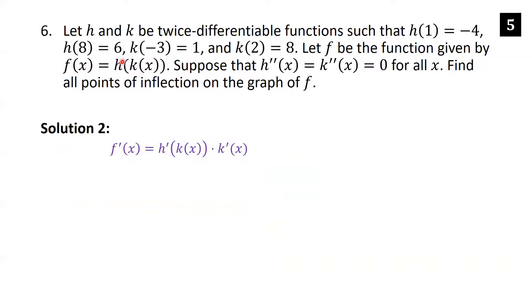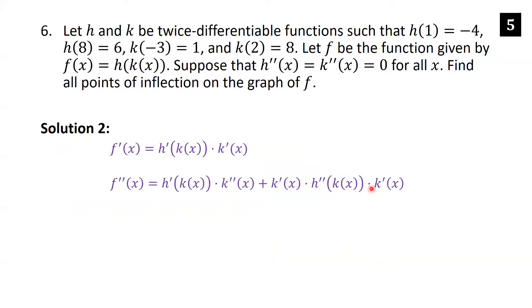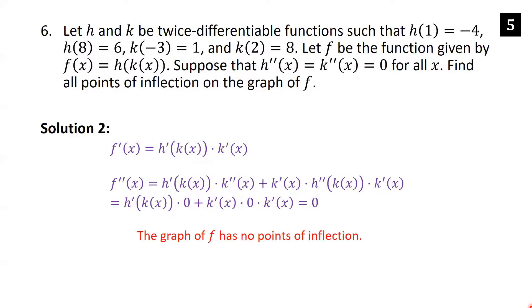Second solution: by the chain rule, f'(x) = h'(k(x)) · k'(x). Then f''(x) by the product rule is h'(k(x)) · k''(x) + k'(x) · h''(k(x)) · k'(x). Since h''(x) = 0 and k''(x) = 0 everywhere, substituting zero for both h'' and k'' gives f''(x) = 0 for all x. So the graph of f has no points of inflection.